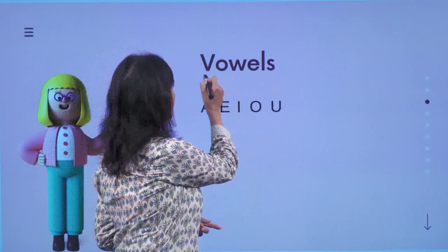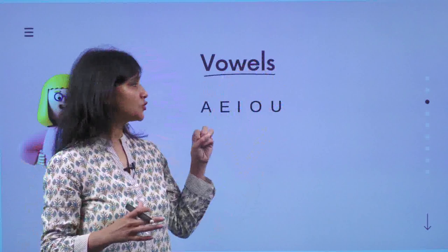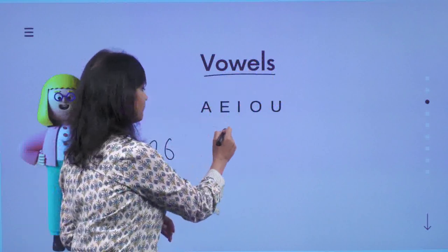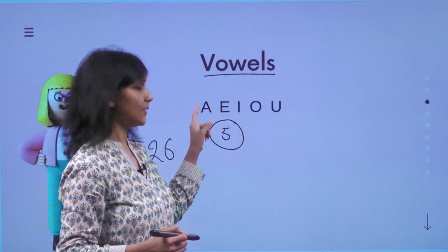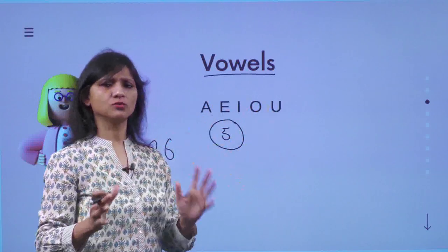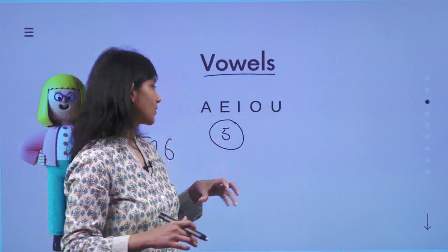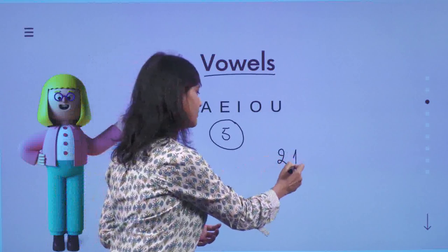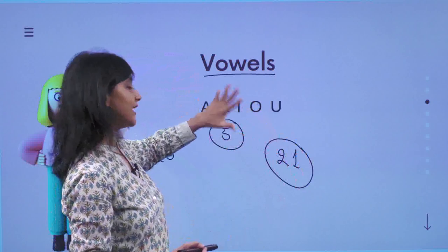However, there is something called vowels. How many of you all know this? So we have got 26 alphabets and 5 vowels. And what are these vowels? A, E, I, O, U. Most of us know this — I think all of us know this — that there are 5 vowels. And if there are 5 vowels, what about the rest? 26 minus 5 is 21.